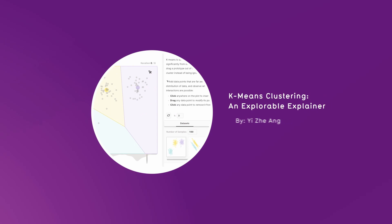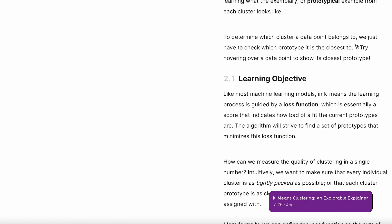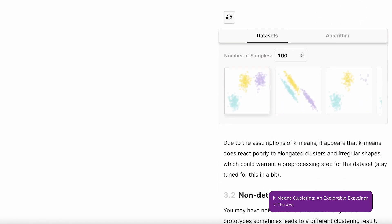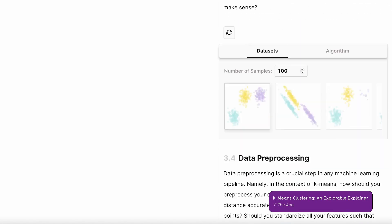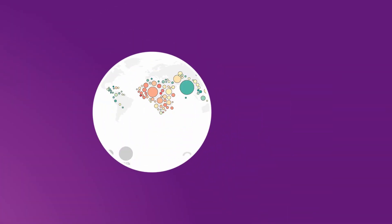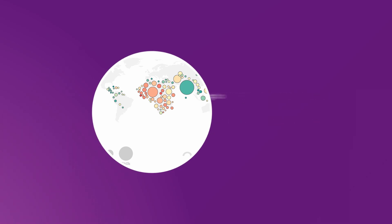K-Means Clustering: An Explorable Explainer by Shan. This interactive article presents a so-called explorable explainer of the K-means clustering algorithm. It attempts to push the envelope of how visual explanations can be designed on an interactive computational medium such as the web.